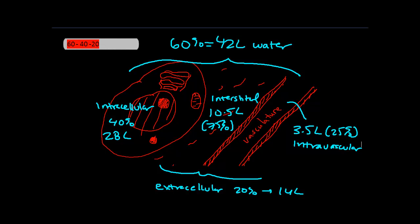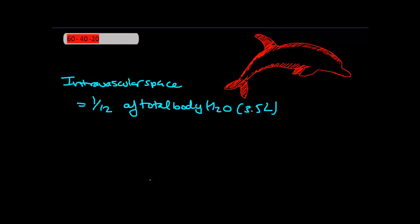This brings up an interesting point to remember. Your intravascular space accounts for 1/12th of your total body water, or 3.5 liters, and everything else accounts for 11/12ths of your total body water, or 38.8 liters.